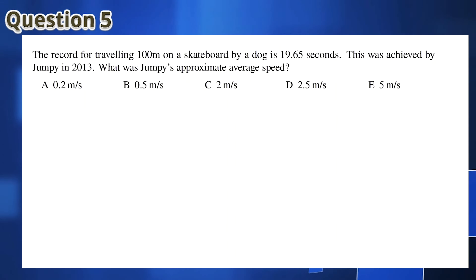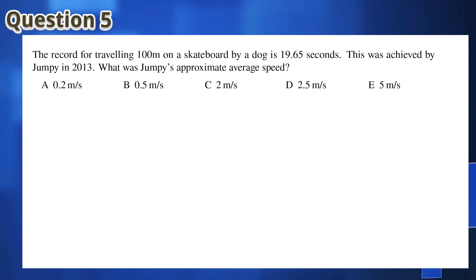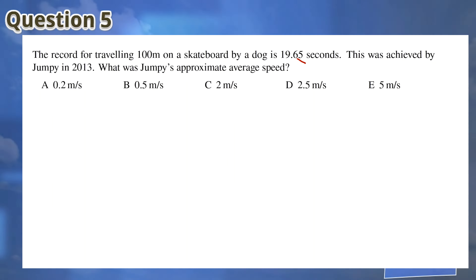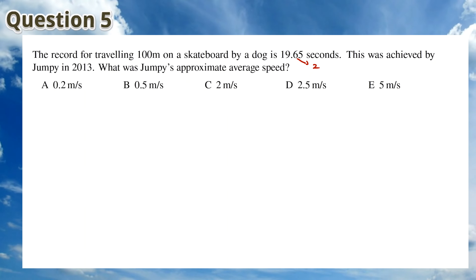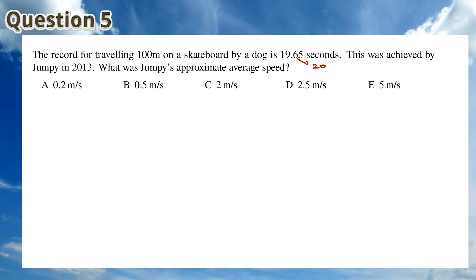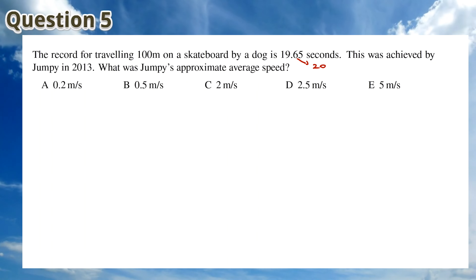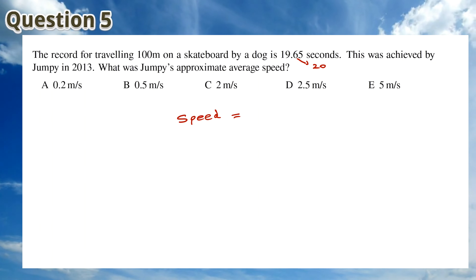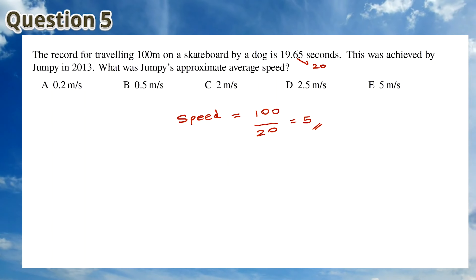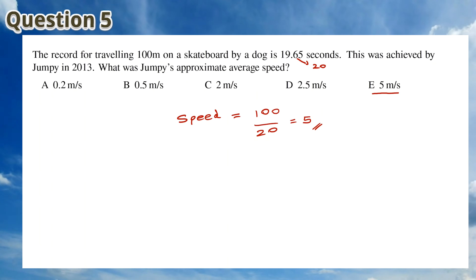For Question 5, Jumpy's speed is his distance, which is 100 meters, divided by his time. His time is 19.65 seconds, which is approximately equal to 20 seconds. So Jumpy's speed is 100 divided by 20, which is 5 meters per second. This means that the answer is E.